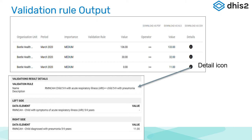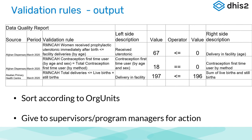When you see a missing value and then a value like this, you need to determine whether the eleven should have been the acute respiratory count, and you need to go and find out why there is a missing value and what is the correct response to fix this validation rule. There are many ways of sorting this out. If you download the list into Excel, you can sort it by organization unit and give it to supervisors and program managers for action.